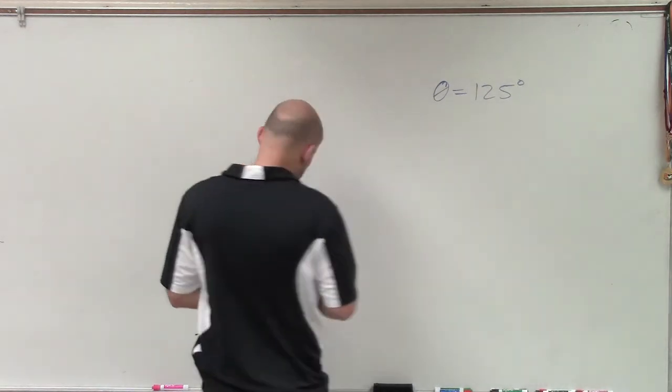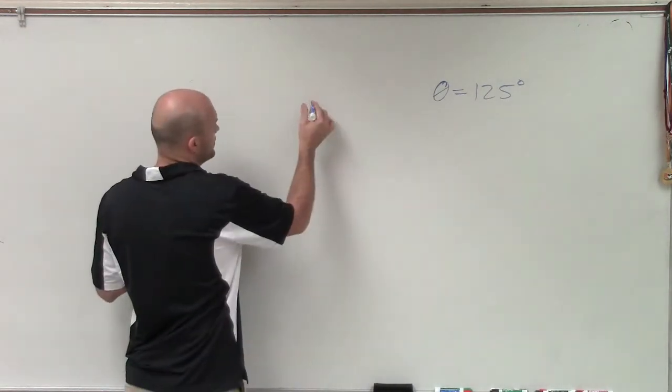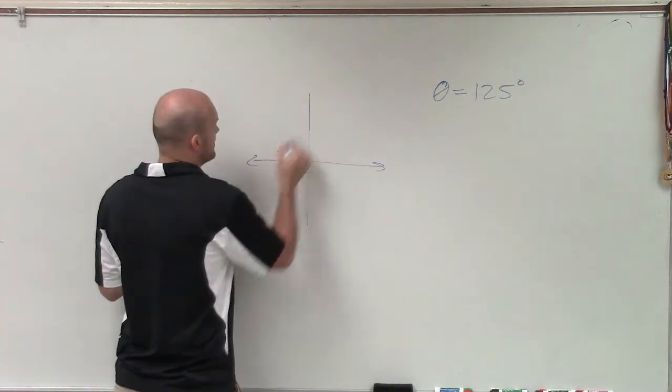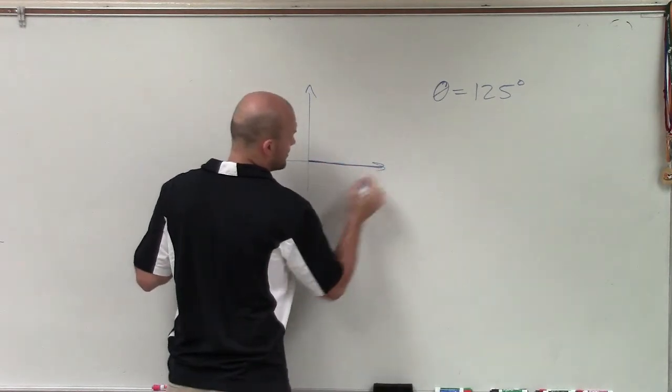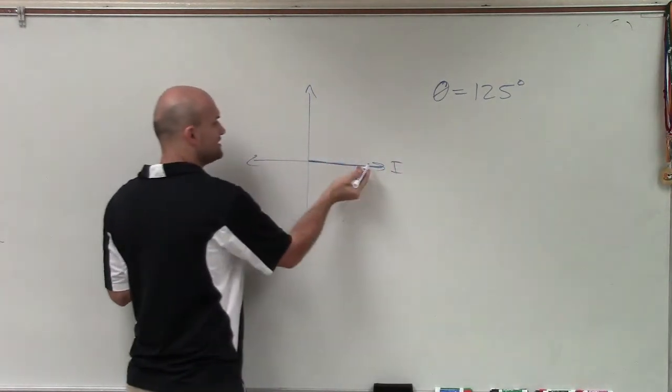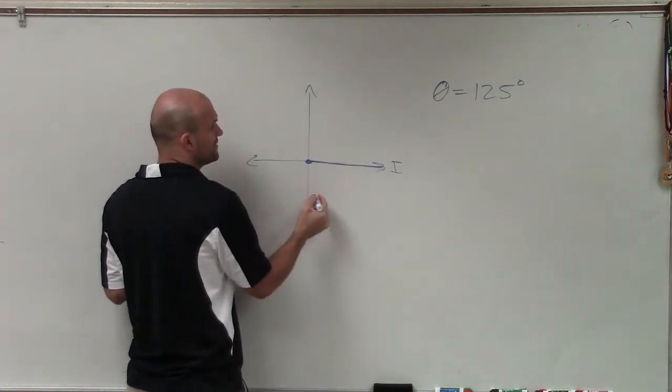So coterminal angles are angles that are going to have the exact same initial and terminal sides. So if we go ahead and sketch this angle, and we like that it's in degrees, because when looking at degrees, here's always going to be my initial side when I'm talking about standard form. So I need to rotate an array from this initial side with my vertex here, 125 degrees.